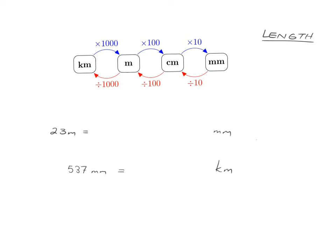We're going to look at how we can convert between different units of measurement — kilometers, meters, centimeters, and millimeters. If we can always picture this diagram, we can work out any conversion we want. Kilometers are distances you might walk, meters are about one big stride, centimeters are about the width of your fingernail, and a millimeter is that very tiny little line on your ruler.